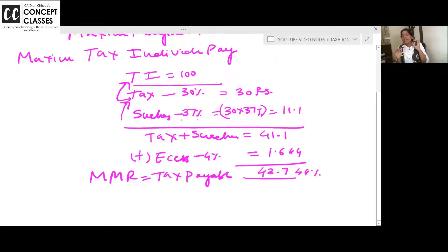Pause the video now. Take the notes. Tax is calculated on income. Surcharge is calculated on tax. Tax plus surcharge, whatever it is, add ESS. Clear? Tax is calculated on income, surcharge is calculated on tax, ESS is calculated on tax plus surcharge.